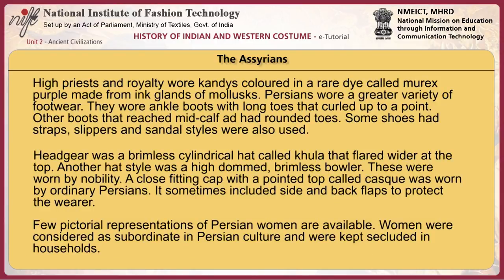High priests and royalty wore candies colored in a rare dye called murex purple, made from ink glands of mollusks. Persians wore a greater variety of footwear — ankle boots with long toes that curled up to a point, other boots that reached mid-calf with round toes, some shoes with straps, and slippers and sandal styles were also used.